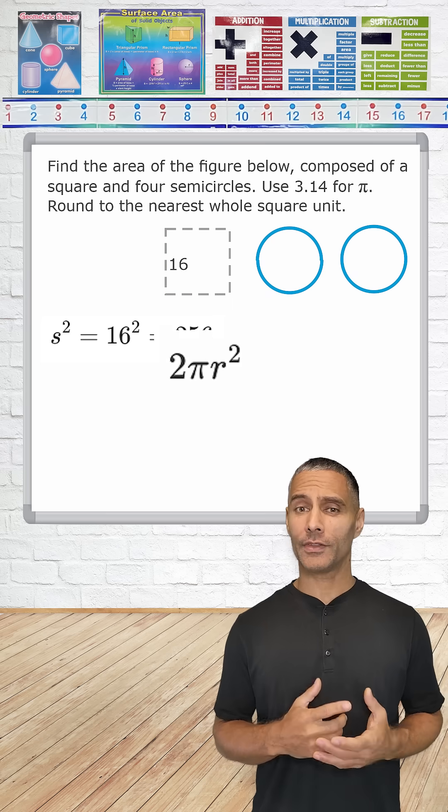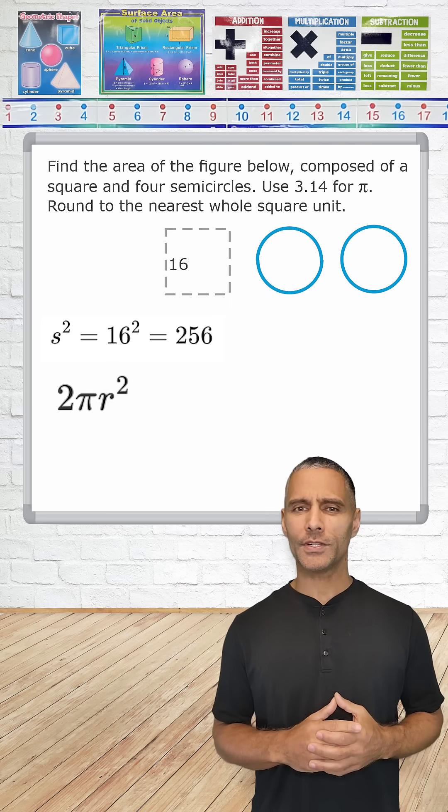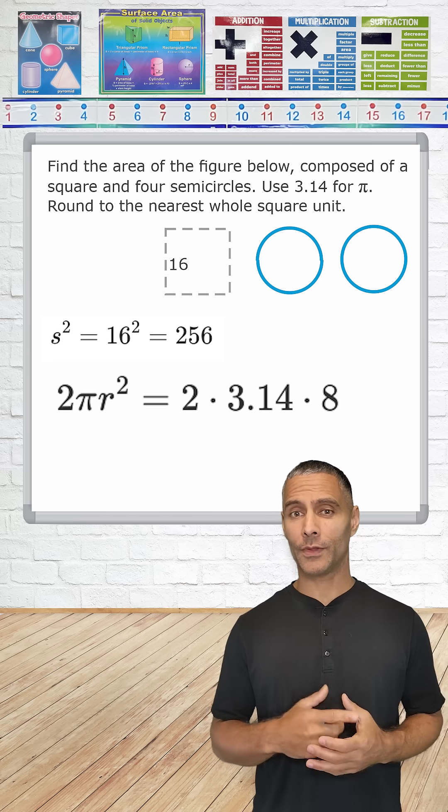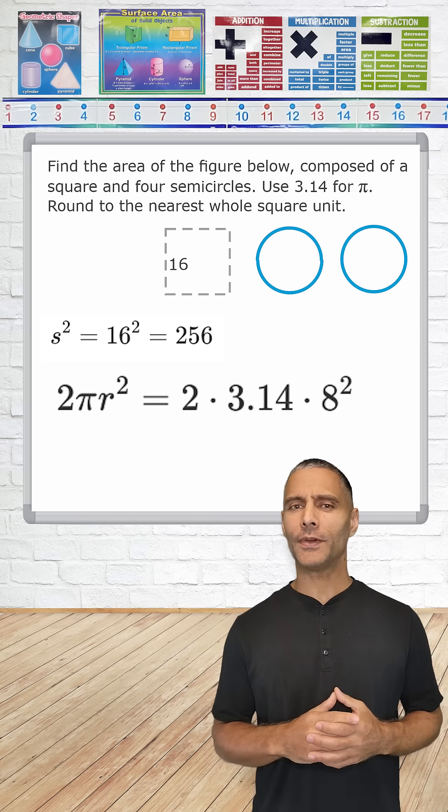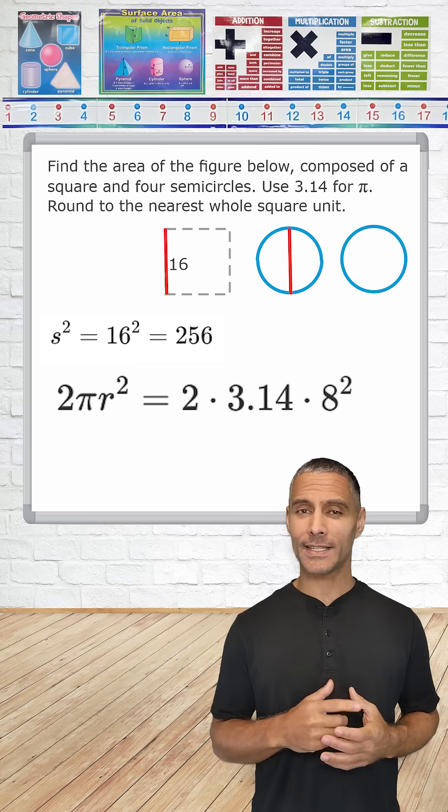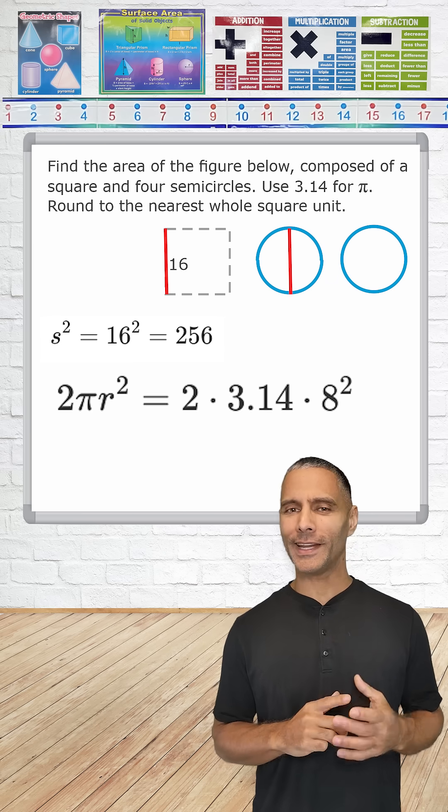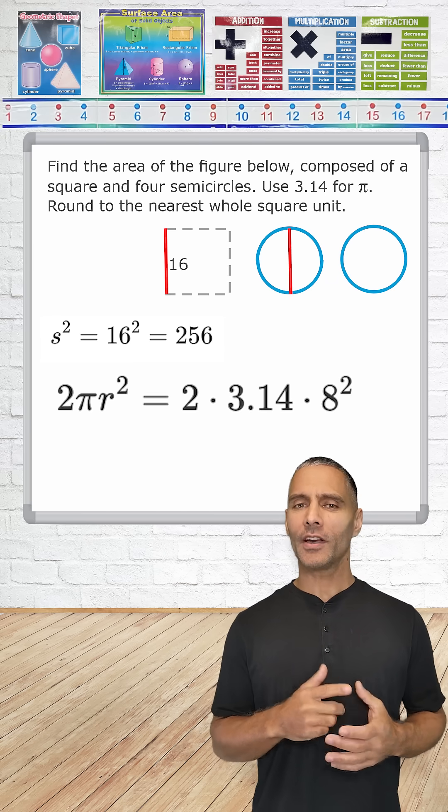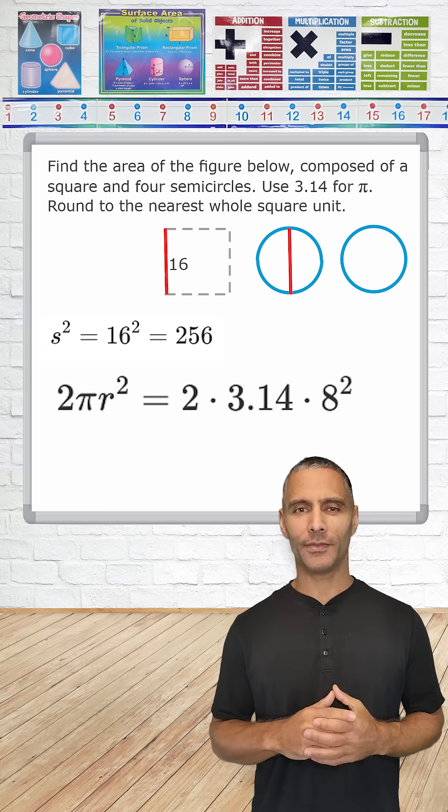All right, now let's find the area of the two circles. First, we substitute 3.14 into pi and substitute 8 into the radius. Now notice that the figure gave the diameter length, which is 16. We must remember that the radius length is exactly half of its diameter. Cutting 16 in half gives us a radius of 8.